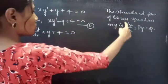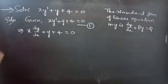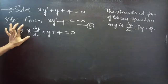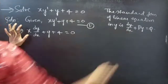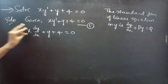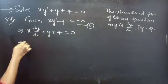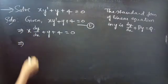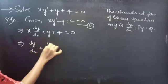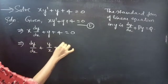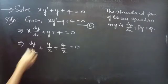If you notice, the coefficient of dy/dx is 1 in standard form. So, we'll reduce the given differential equation to the standard form of linear equation in y. For that, we have to make the coefficient of dy/dx equal to 1, so we'll simply divide the whole equation by the coefficient x. Then we'll get dy/dx + y/x + 4/x = 0.